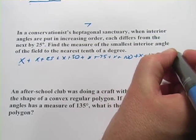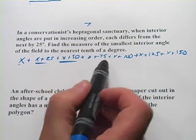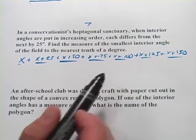then x plus 100, then x plus 125, and then x plus 150. Is that seven? One, two, three, four, five, six, seven. That is seven.